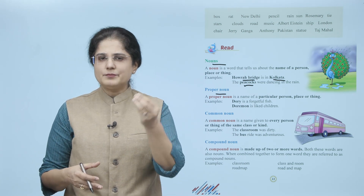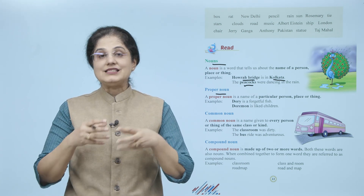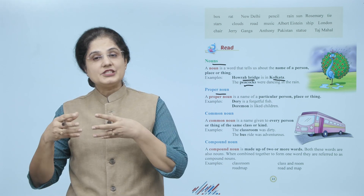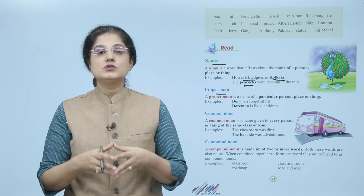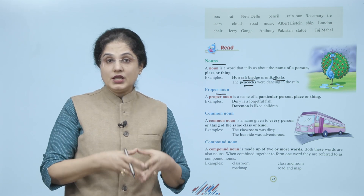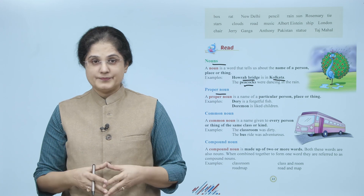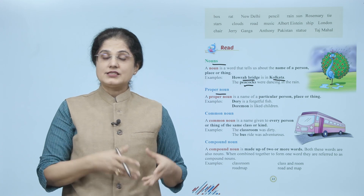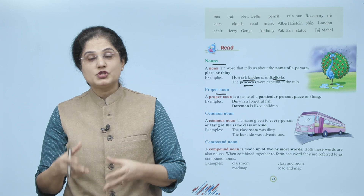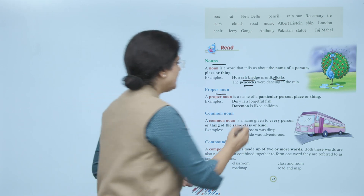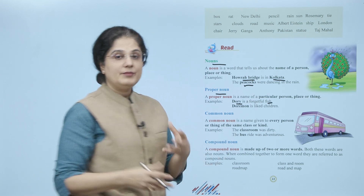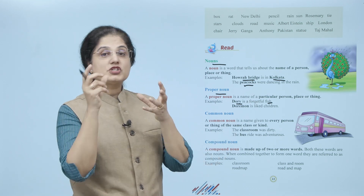Now let us look at proper noun. A proper noun is the name of a particular person, place or thing. Kisi khas insaan, jagah ya kisi cheez ka jo naam hain, usko kya kehte hain — proper noun. For example: Dory is a forgetful fish. Next example hai: Doraemon is liked by children.